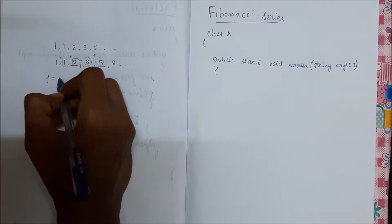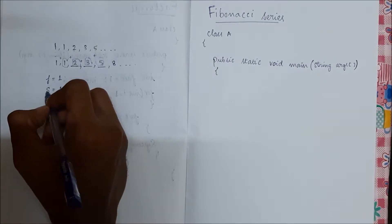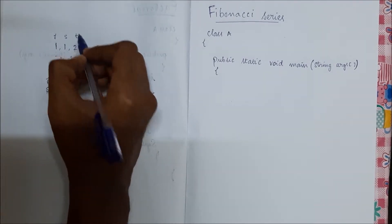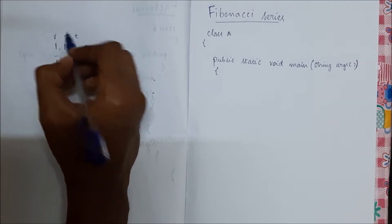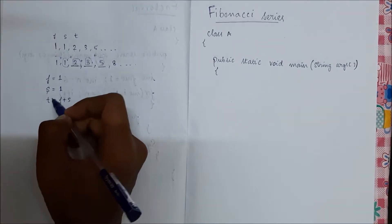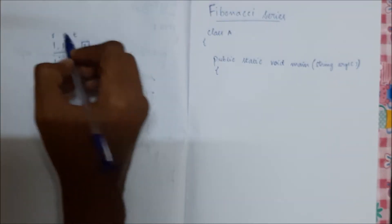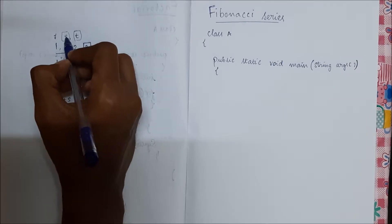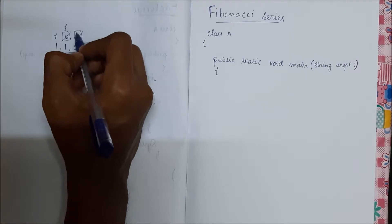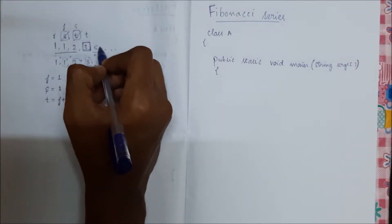For the program, let us take two variables: f equal to one, where f is the first term, and s equal to one, where s is the second term. The third term t equals f plus s. Now we have found three terms. To find the next term, we make s the new first and t the new second.